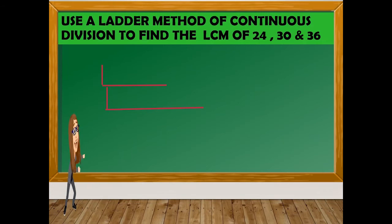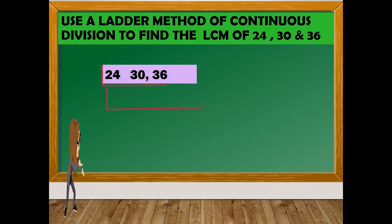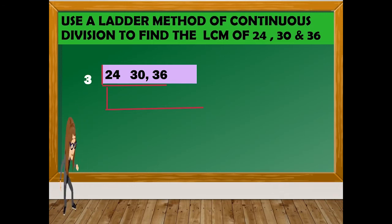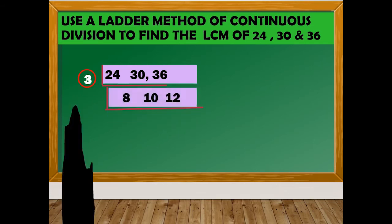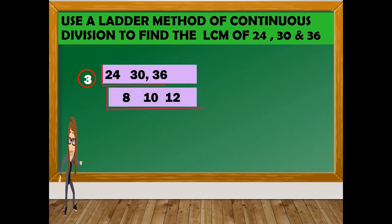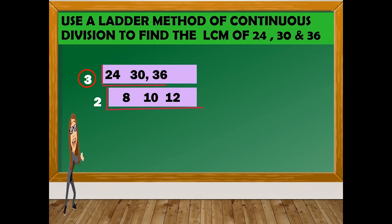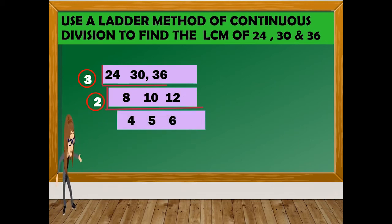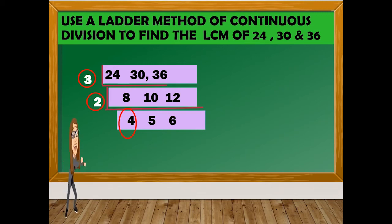Let us find the LCM of 24, 30, and 36. The common factor is 3. So 24 divided by 3 is 8. Then the common factor for 8, 10, and 12 is 2. So 8 divided by 2 is 4, 10 divided by 2 is 5, and 12 divided by 2 is 6. What is left is 4, 5, and 6.